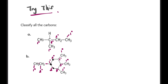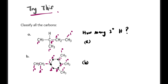How many tertiary hydrogens are there in each structure? In structure A, there's one tertiary carbon, so there is one tertiary hydrogen attached to it. In structure B, we need to carefully count the tertiary carbons. We can expand it — each carbon has a certain number of bonds shown, and the remaining bonds up to 4 are hydrogens.